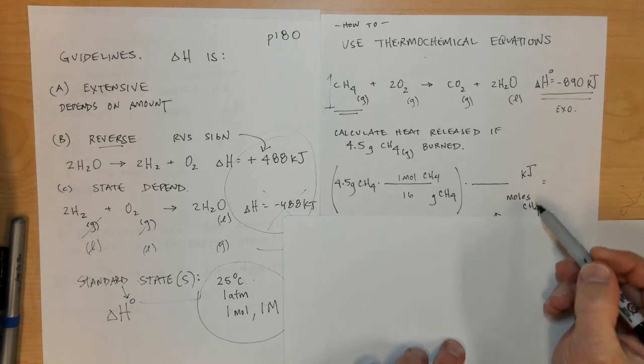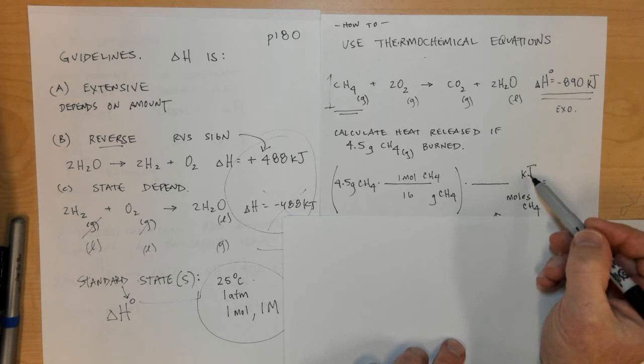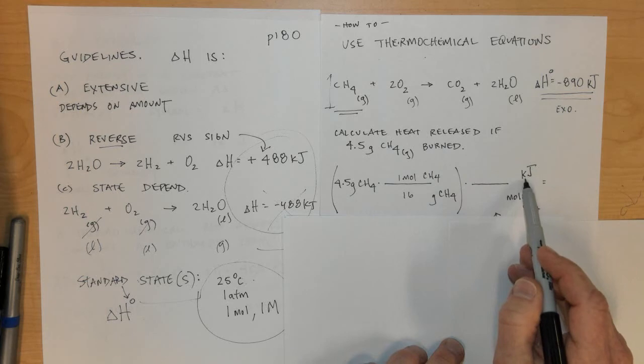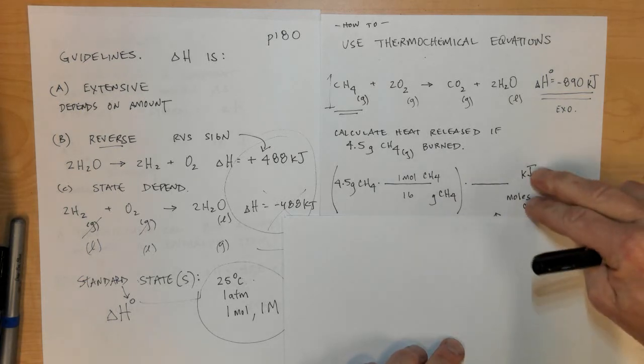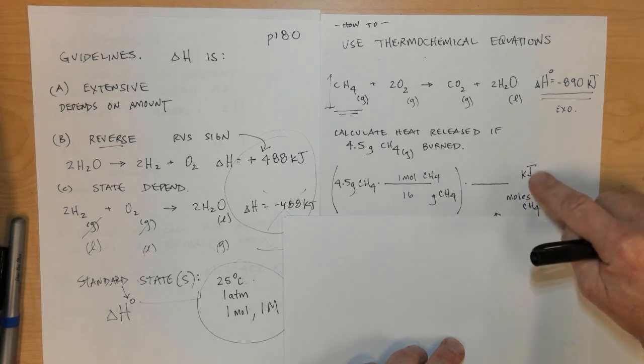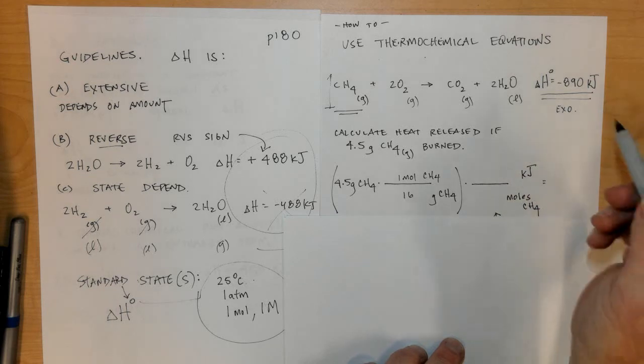Kilojoules is my new set of units because I want to know heat, and heat is measured in kilojoules. Once I put my units in a position where they're going to be cancelled and my desired units in a place where they'll be the new units, I can now pick the numbers off of the balanced equation.